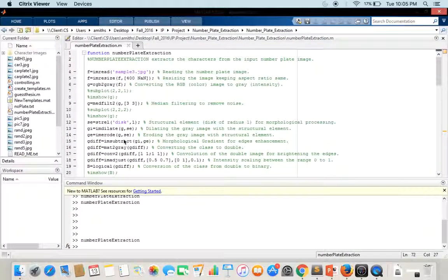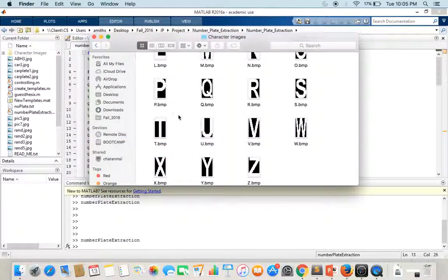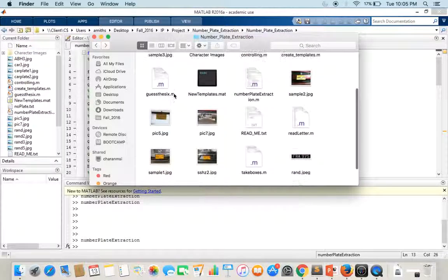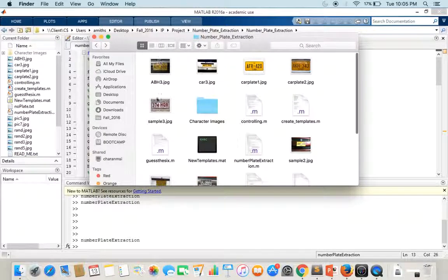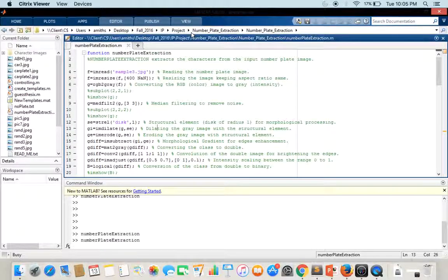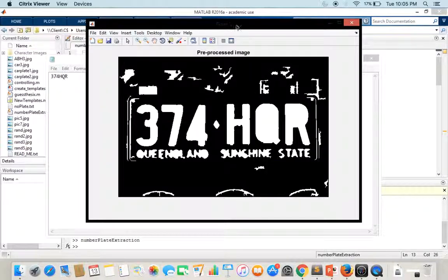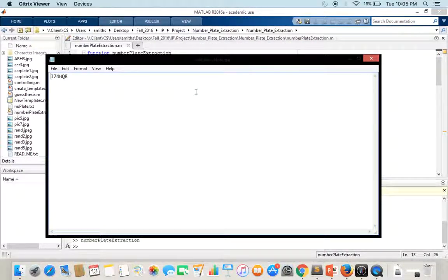Let's go ahead and run this project. I'm currently taking sample3.jpg. This is sample3.jpg. When I run this, I'm currently getting two outputs. This is the pre-processed image—that is, after morphological processing, convolution, and image thinning, this is what we get. We extract each character into a separate file and at the end this is my output: 374HQR.